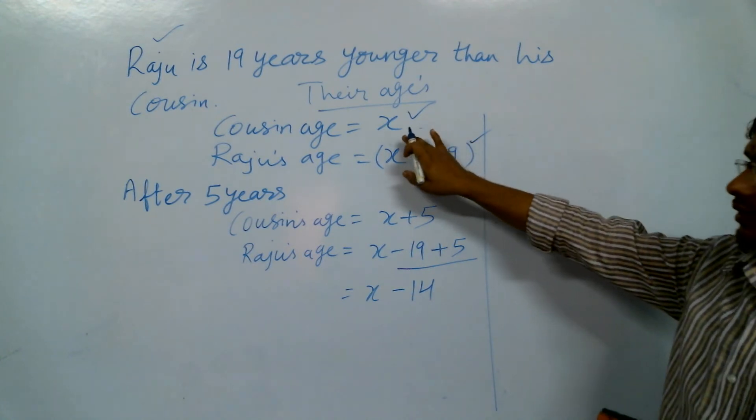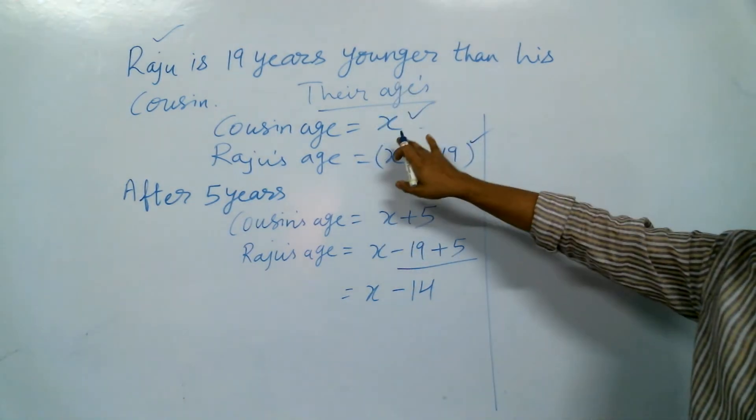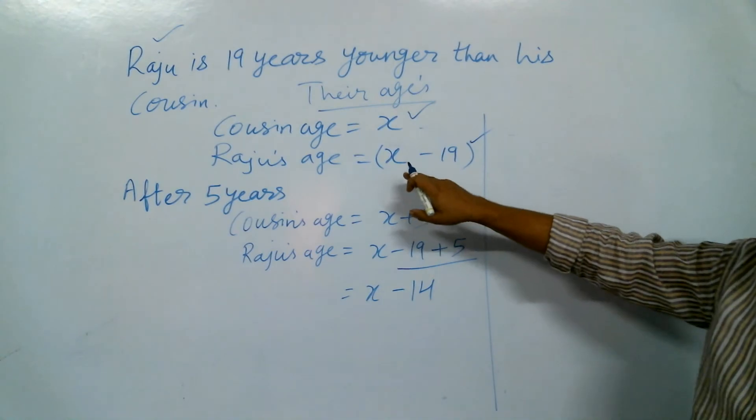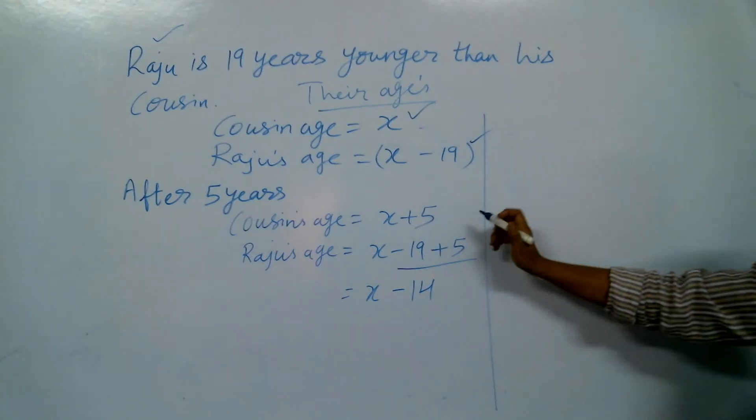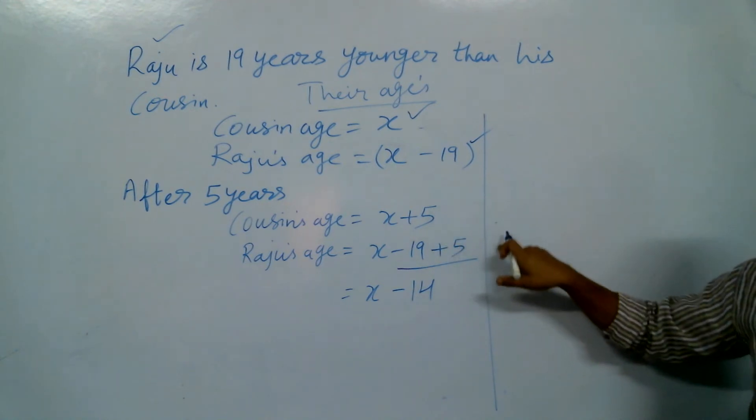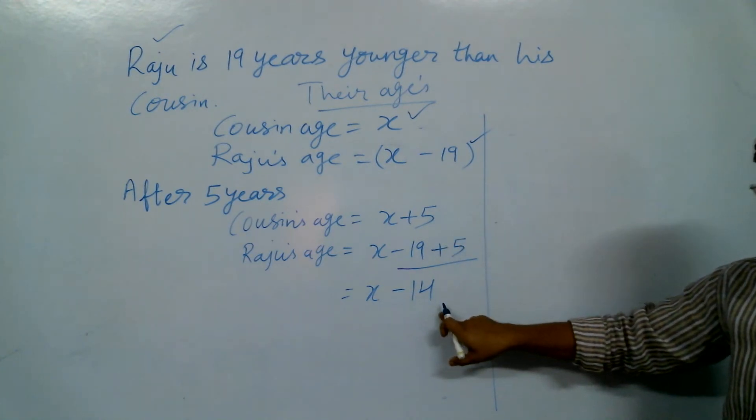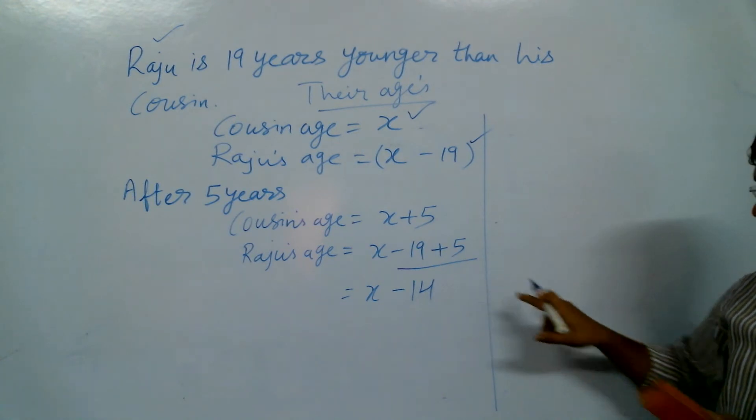So the question we got: the cousin's age is x, Raju is x minus 19. Then after 5 years we add 5, so we get x minus 14. Minus 19 plus 5 is minus 14.